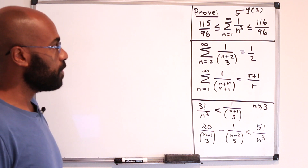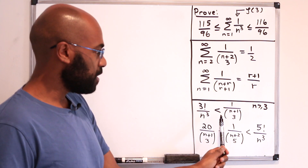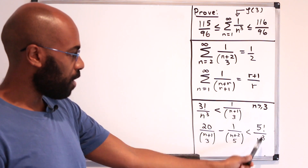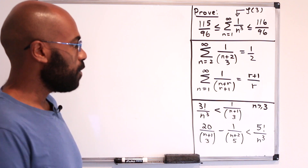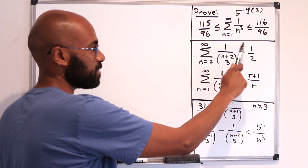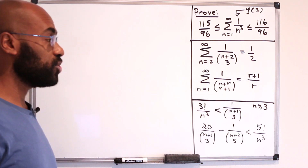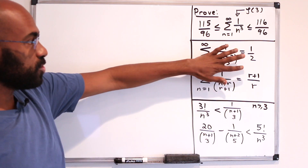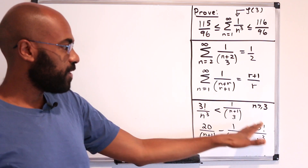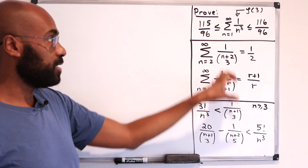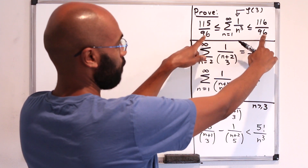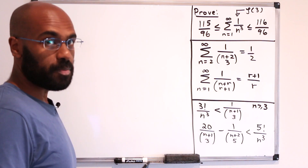Here's the process we're going to go through. First, we're going to compare 1 over n cubed with reciprocals of binomial coefficients. Then to sum over all the values of n cubed, we'll be summing over these reciprocals and use some information we know about sums of reciprocals of binomial coefficients that we'll actually develop. The bounds are only 1/96 apart, so they're really tight.